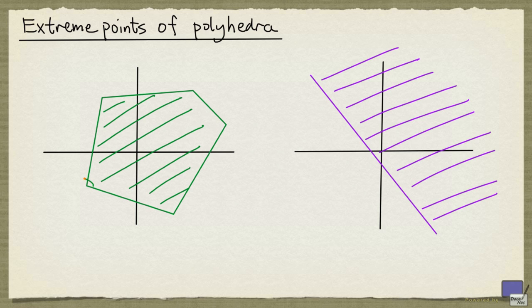at least in 2 and 3 dimensions, one can observe that there are points that are corners like these ones. Clearly if the polyhedron is a half space, there is no such corner. It turns out that these corners are important structural elements of a polyhedron, as we'll see later.